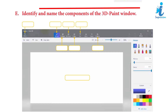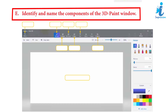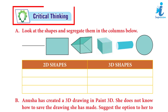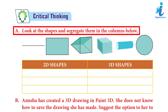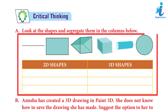Identify and name the components of the 3D Paint window. Answer: Do it yourself. Critical thinking — A: Look at the shapes and segregate them in the columns below. Answer: Do it yourself.